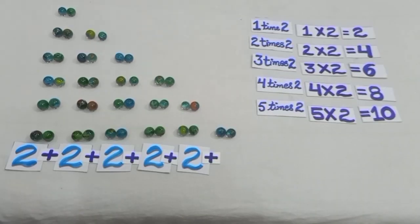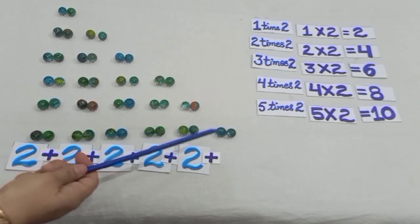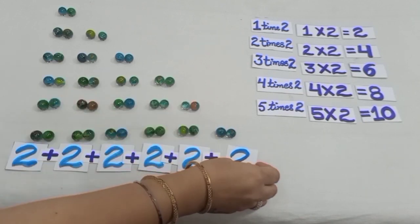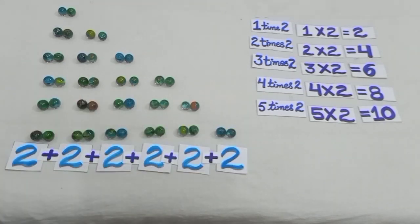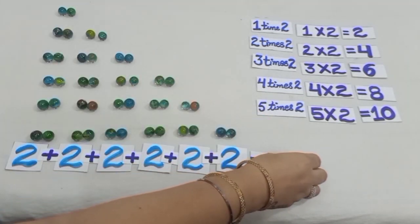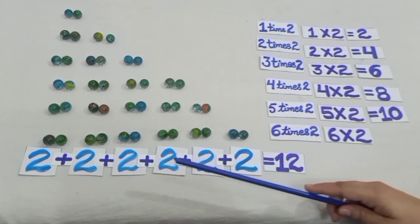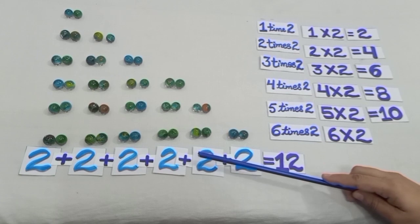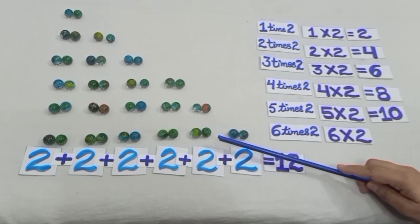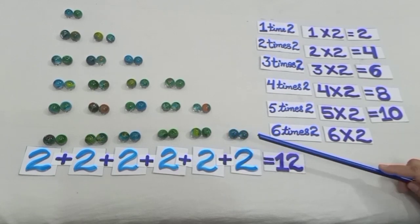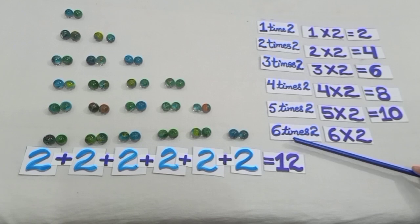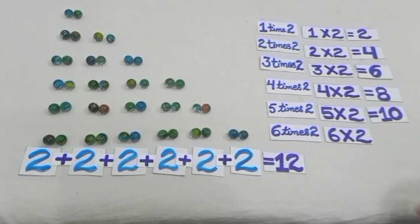Earlier we had 10 marbles and now 2 marbles more, so we have 12 marbles. You can see we have 6 groups with 2 marbles in each group. That means 6 times 2, and we write it as 6 into 2, which is equal to 12.